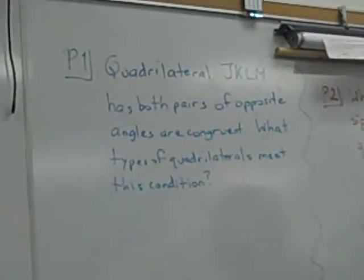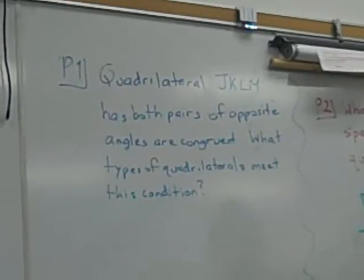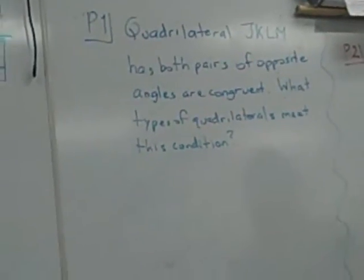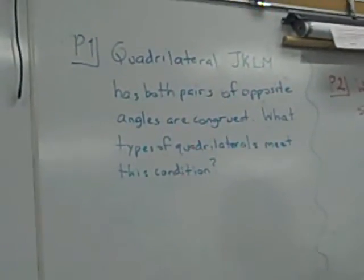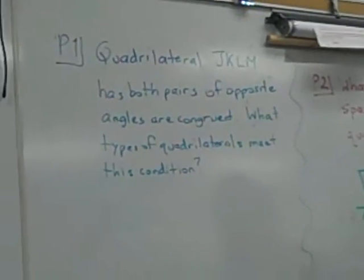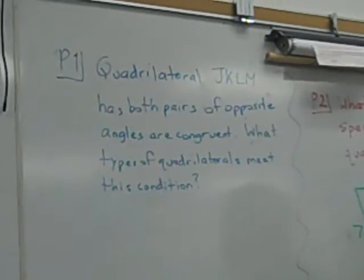All right, here's our first example problem. It says that quadrilateral JKLM has both pairs of opposite angles that are congruent. The question is, what types of quadrilateral meet this condition?